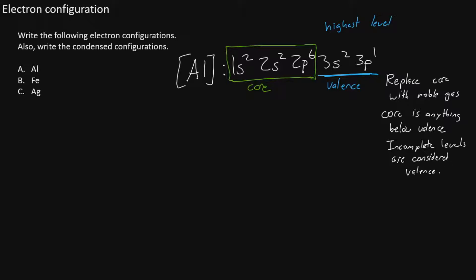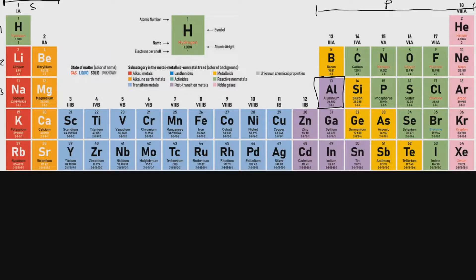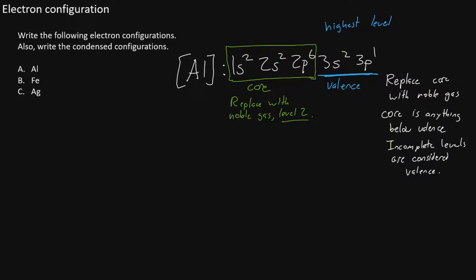We'll replace the core with a noble gas that has two levels. Consulting the periodic table, the noble gases are in group 18, and the noble gas on level 2 is neon. So in place of the core, we write neon in brackets, then continue with 3S2 and 3P1. This is the condensed form.